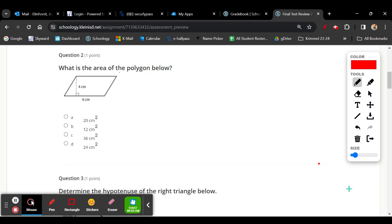Number 2, we have a parallelogram. For the parallelogram, you're going to need the base and the perpendicular height to find the area. And it's just going to be base times height, 4 times 6 for the solve.